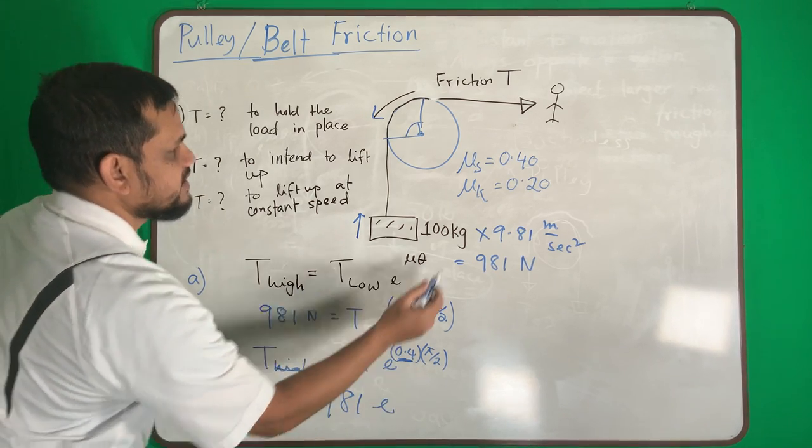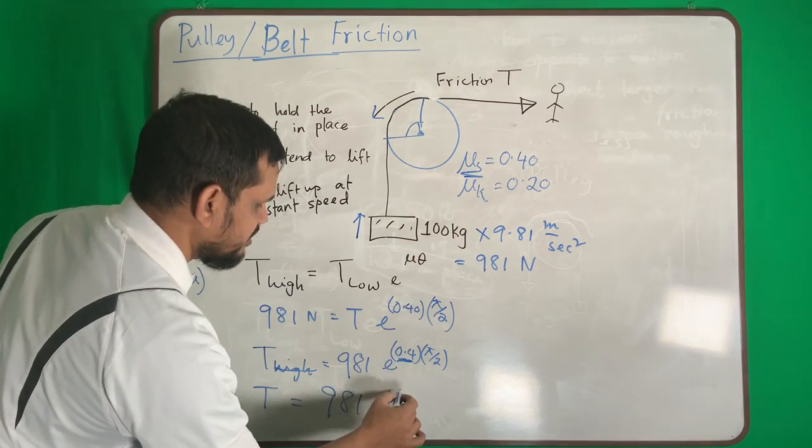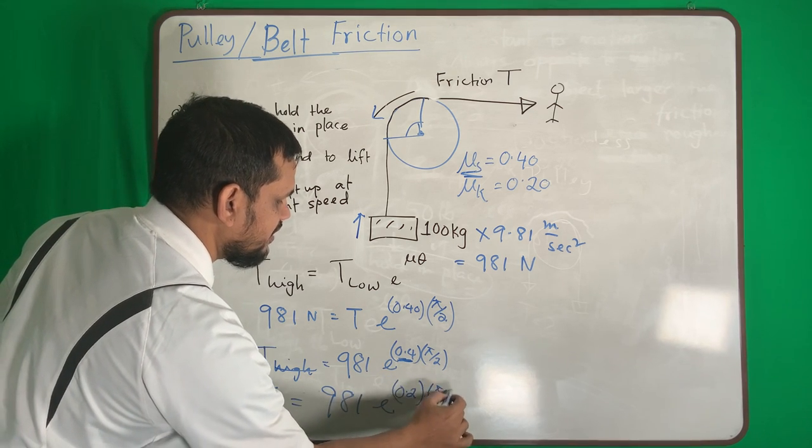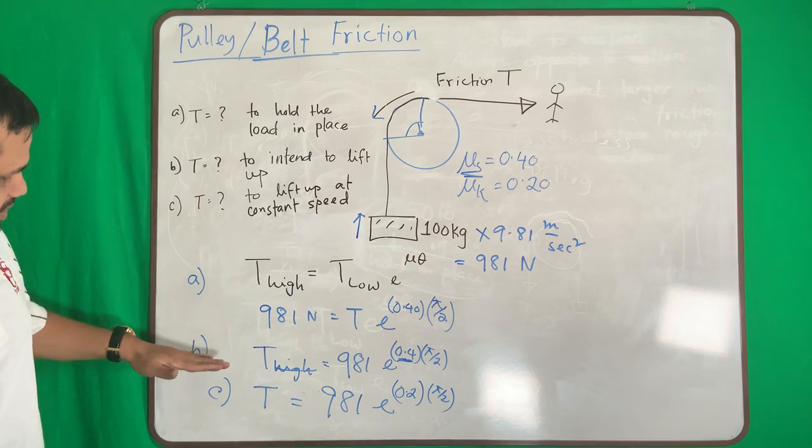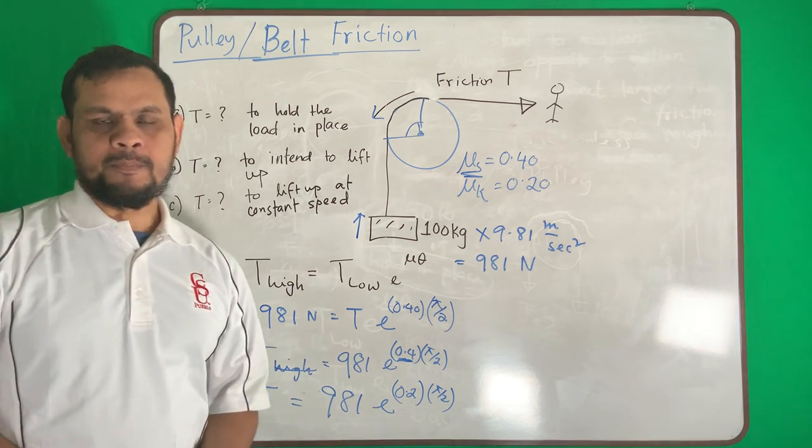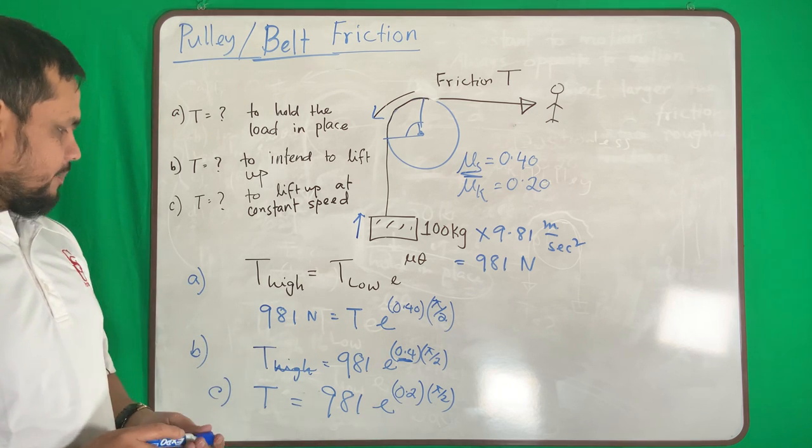we cannot use mu s, we have to use mu k, 0.2 pi by 2. So that is the difference between B and C: mu s and mu k. This remains the same.